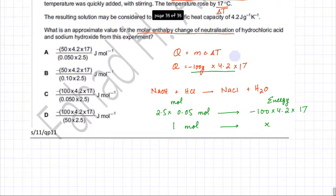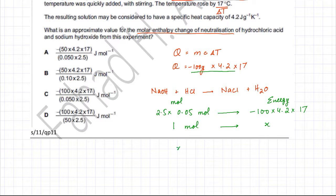Now x would come out to be equal to minus 100 multiplied by 4.2 multiplied by 17 and divided by 2.5 times 0.05. So this would be your molar enthalpy change and I'm going to now try and figure out which one is the correct option.